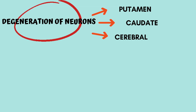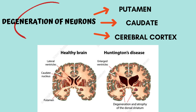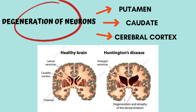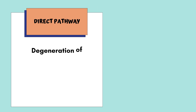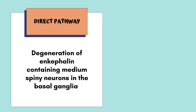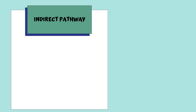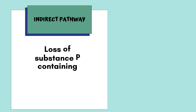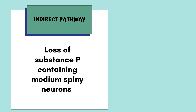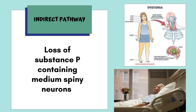The primary feature is degeneration of neurons in the putamen, caudate and the cerebral cortex. Huntington's brain shows enlarged ventricles and degeneration and atrophy of the dorsal striatum compared to a healthy brain. In the direct pathway, degeneration of enkephalin-containing medium spiny neurons in the basal ganglia causes chorea. In the indirect pathway, additional loss of substance P-containing medium spiny neurons causes dystonia and akinesia.